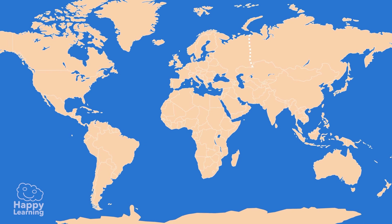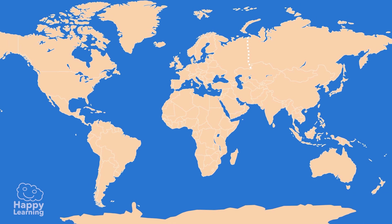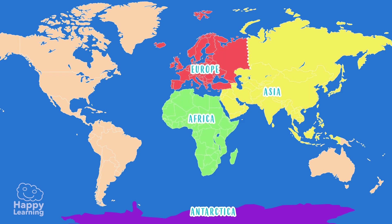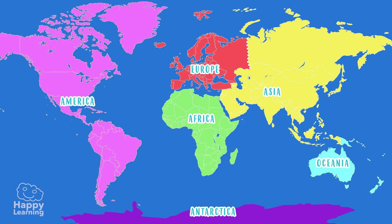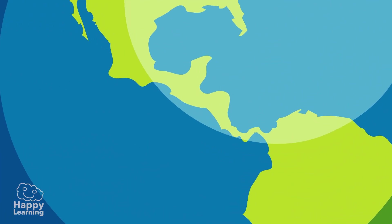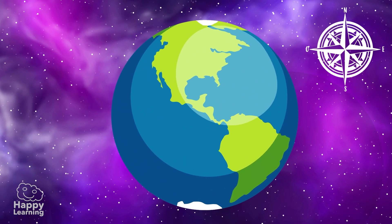Look at this map of the world. It is divided into six continents: Antarctica, Asia, Africa, Europe, Oceania, and America. But Antarctica is not usually counted because it is uninhabited. America is the second largest continent on Earth, and it stretches from the North Pole to the South Pole.